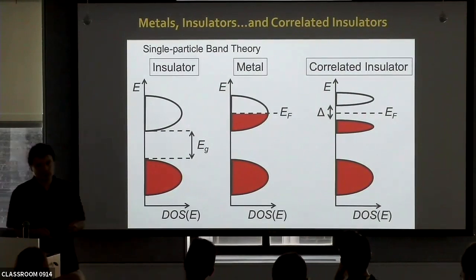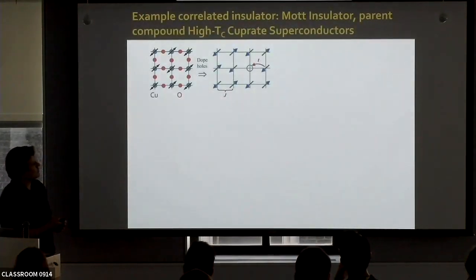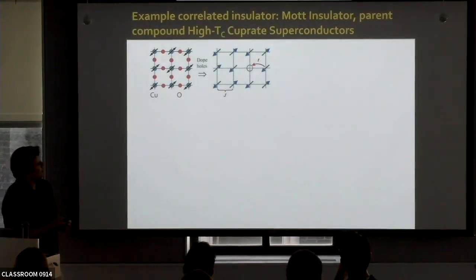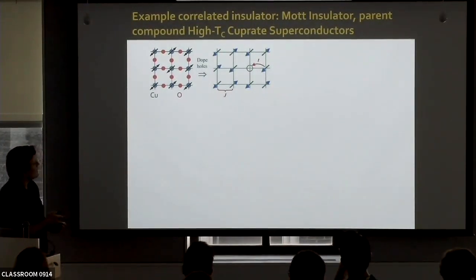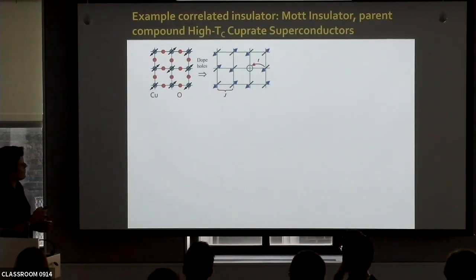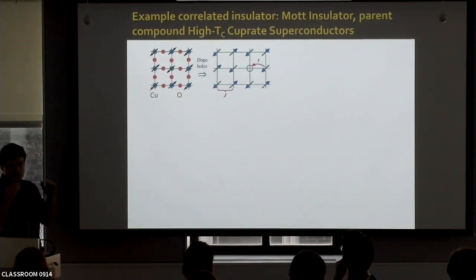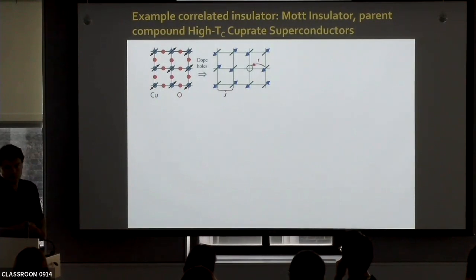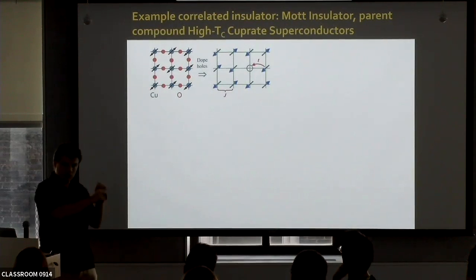One of the most famous examples of correlated insulators are Mott insulators. They are believed to be the parent compound of the high-temperature cuprate superconductors. In a cuprate superconductor, you have these copper-oxygen planes. In the copper atoms, you have one electron per copper atom — half filling of the system. The band that is half filled should be a metal, but due to strong interactions between electrons, it turns out to be an insulator. And an interesting thing happens as you remove a few of those electrons — now they can actually move.